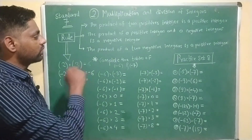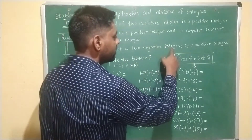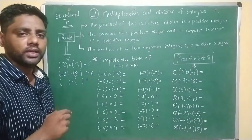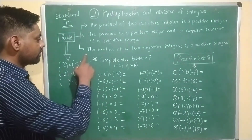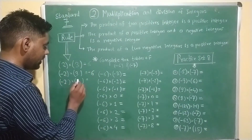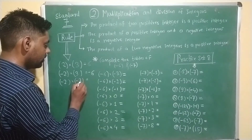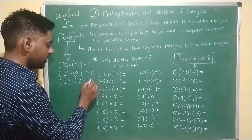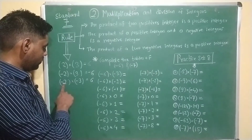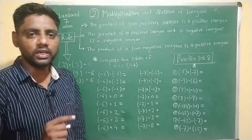Third rule: the product of two negative integers is a positive integer. We take an example: minus 2 multiplied by minus 3 becomes plus 6. The product of two negative integers becomes a positive integer.